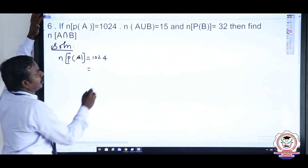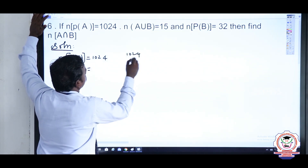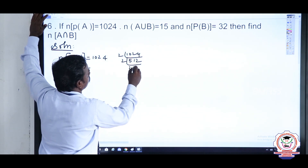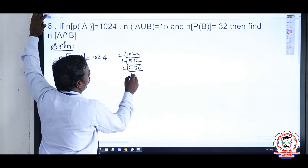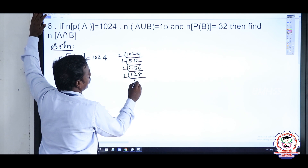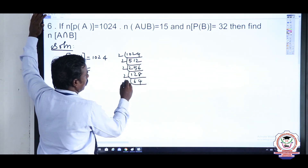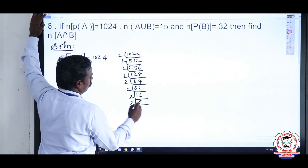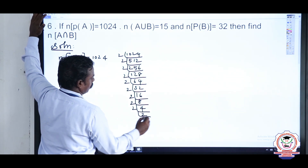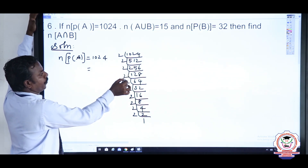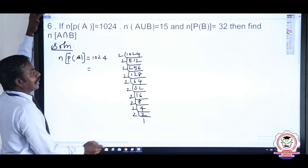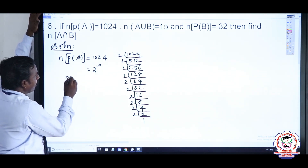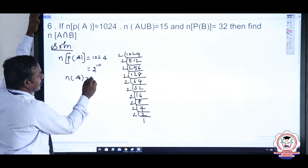For n(P(A)) = 1024, if you divide by 2 repeatedly, 1024 = 2 to the power 10 — there are 10 twos. This is the power set, so from the power set formula, n(A) = 10.